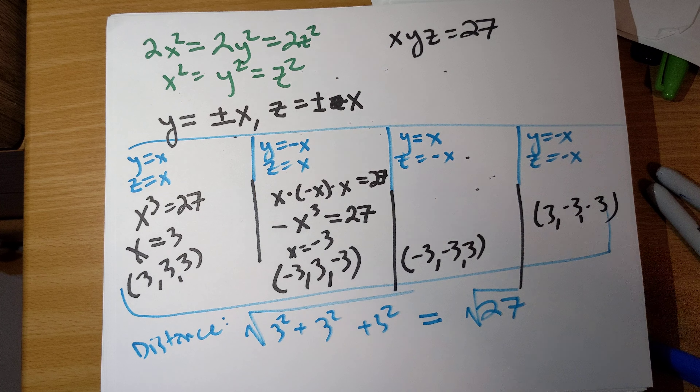So these are the four critical points found using Lagrange multipliers. All four have the same distance from the origin, and the minimum distance is √(3² + 3² + 3²) = √27. It's unsurprising, since x, y, z are treated the same in both the objective function and the constraint, giving so much symmetry in the final answer.